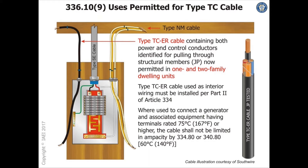Type TC-ER means the cable is suitable for exposed run — ER stands for exposed run. Type TC-ER could also have the suffix JP, which stands for joist pull.